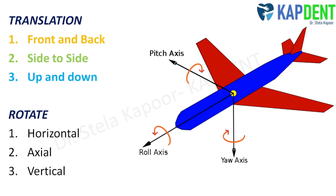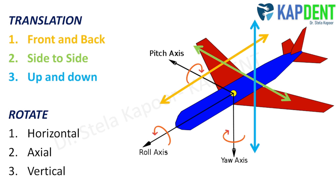Consider an airplane suspended in space. This airplane can translate or move along three planes, namely front and back, side to side, and up and down. Along with this, it can also rotate around three axes, namely the horizontal, axial, and vertical. It is the movement around these three axes which describes the terms Pitch, Roll, and Yaw.